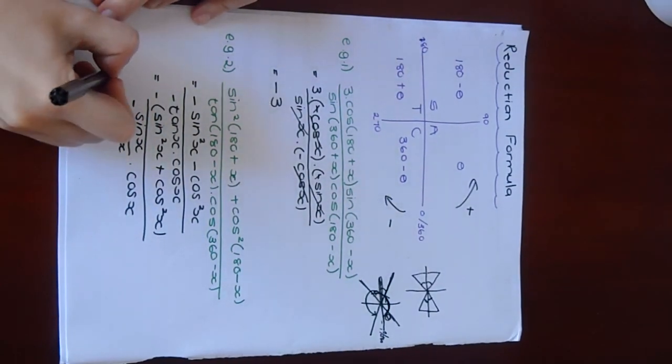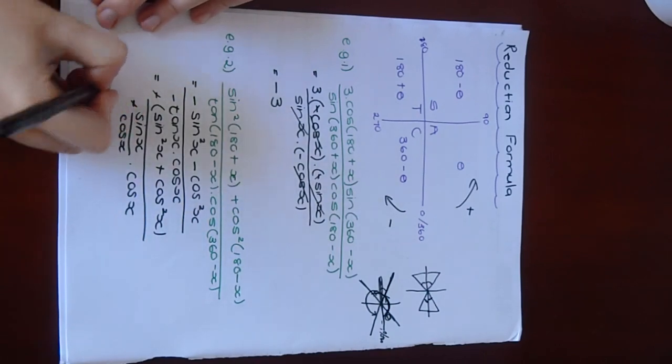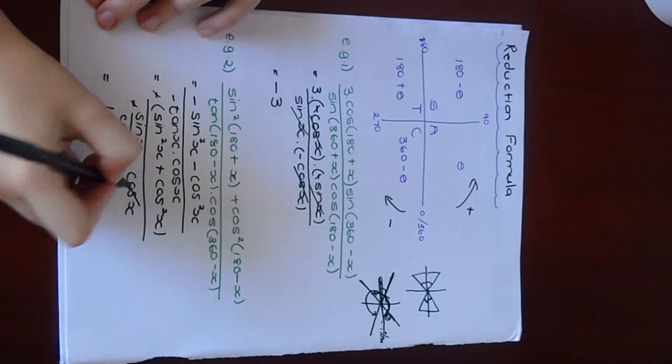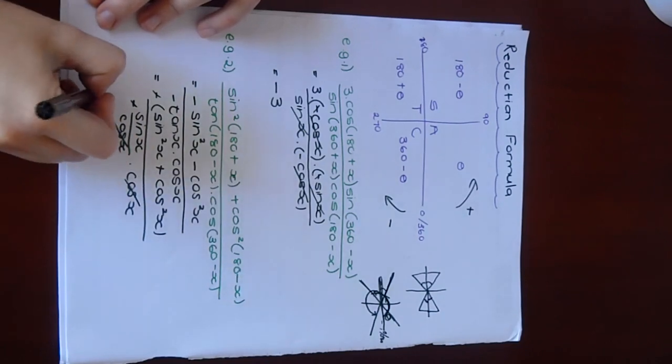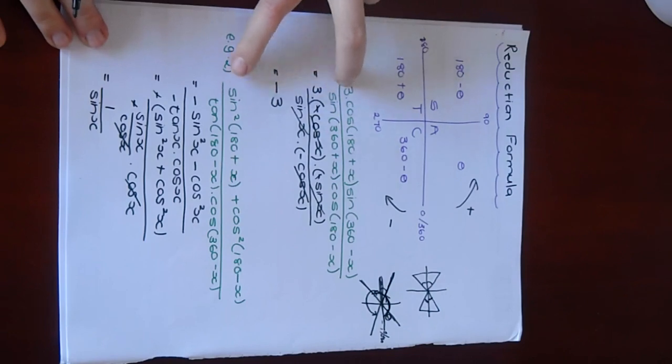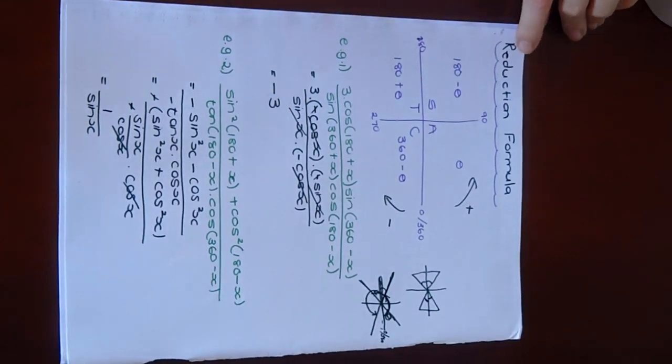These two negatives can actually cancel. The whole thing will become a positive. The top is just going to become 1. These two cosines can cancel, and you're left with 1 over sine X. That simplifies really nicely. The important thing I want you to take note of is how to do these reduction formulas.